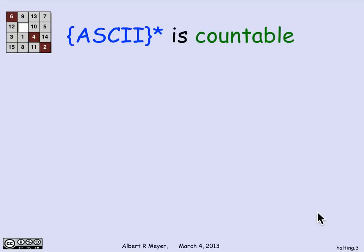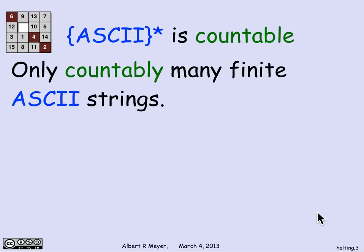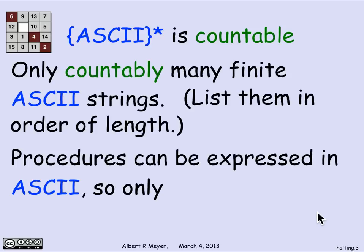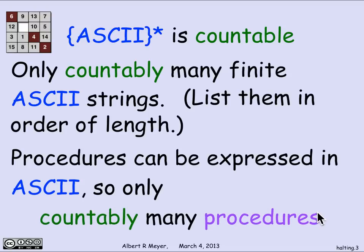We saw that there were only a countable number of finite binary sequences. I mention that because I want to think about sequences over the slightly larger alphabet — instead of 0, 1, the 256 ASCII characters. By the same argument, the set of finite ASCII strings is also countable. You just list them in order of length. The point of looking at ASCII strings is that every procedure we enter into a computer, we type in as an ASCII string. Since there are only countably many finite ASCII strings, it follows that there are only countably many computable procedures.